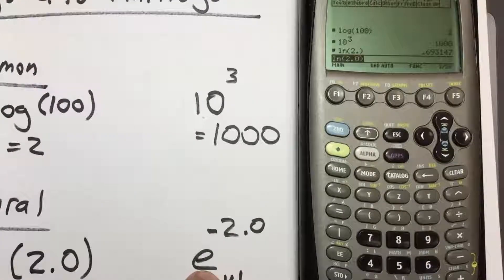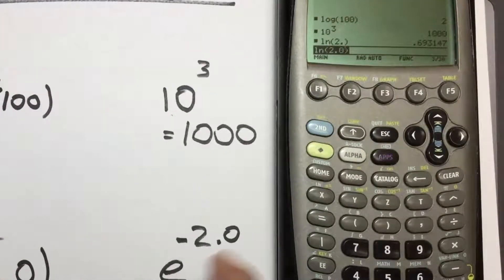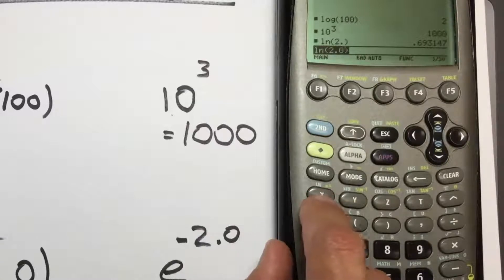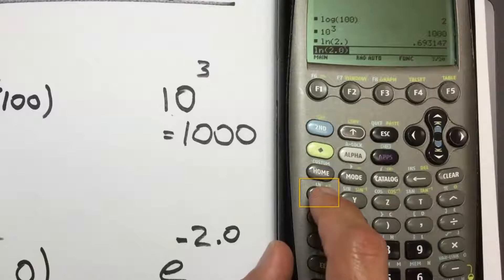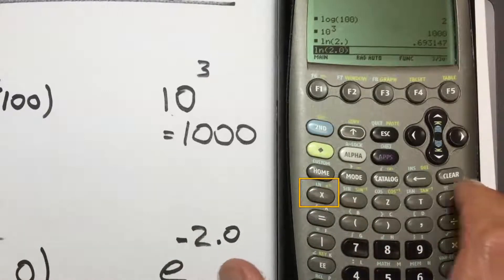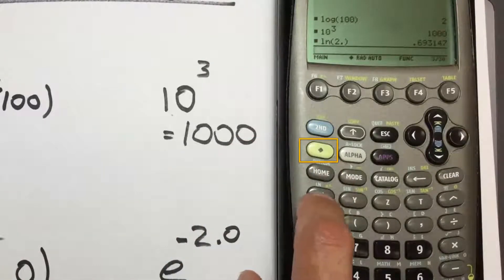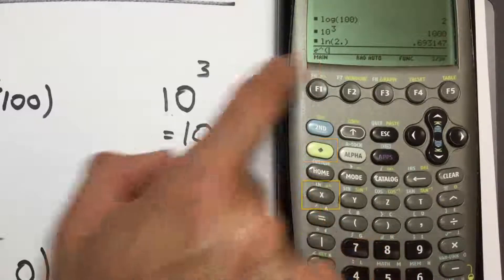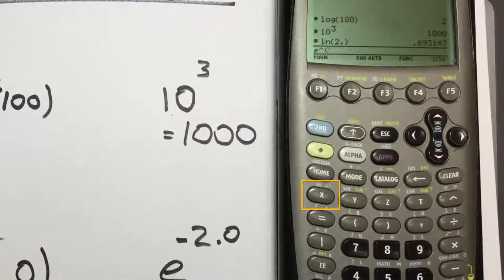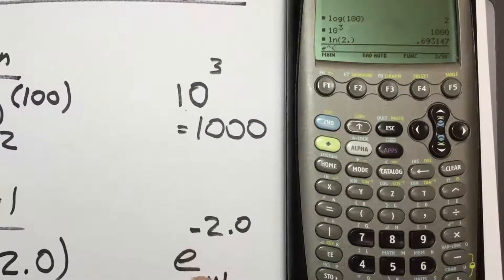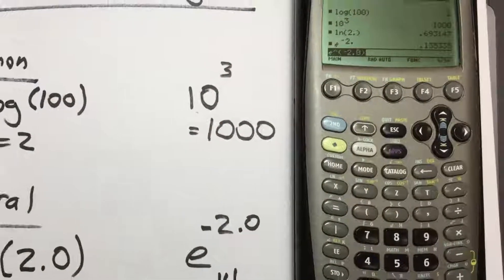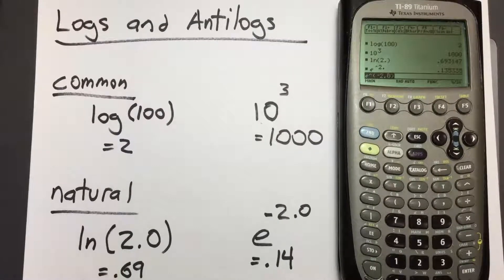To do the anti-natural log, or lowercase e, under the x key in the green text there is a tiny e raised to the x. Clear the screen, press the green button, and then press the x key again. That gives us e raised with parentheses. Enter the number above the e: negative 2.0. Close the parentheses and press enter. We get 0.135, which rounds to 0.14. Not as easy as some calculators, but still possible.